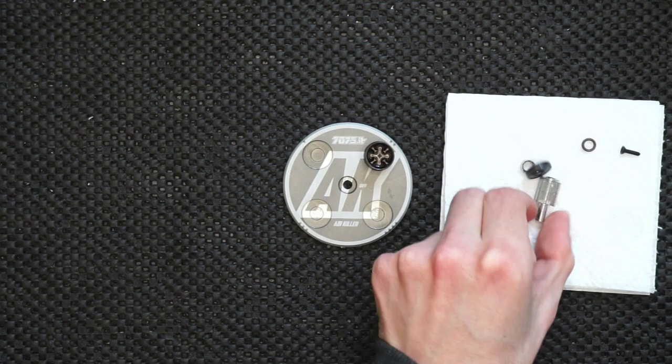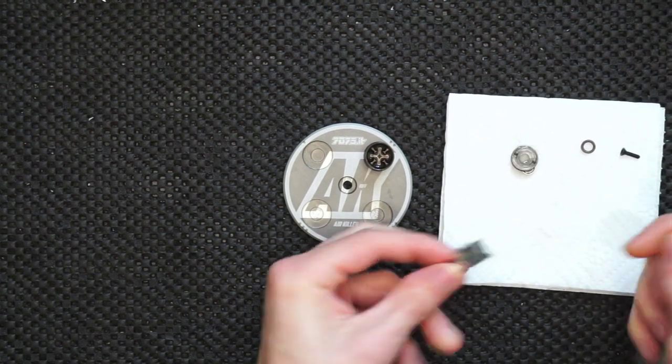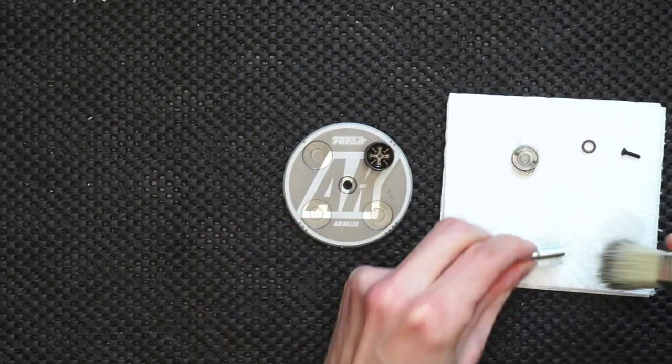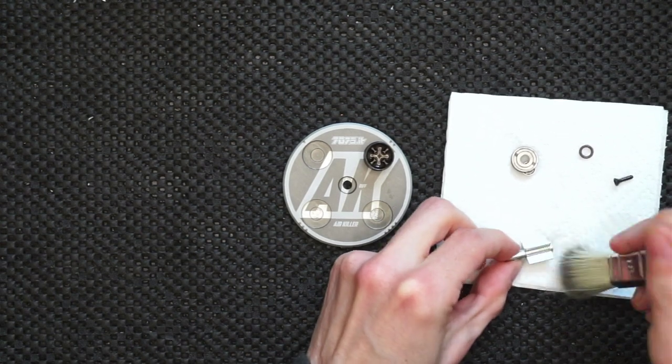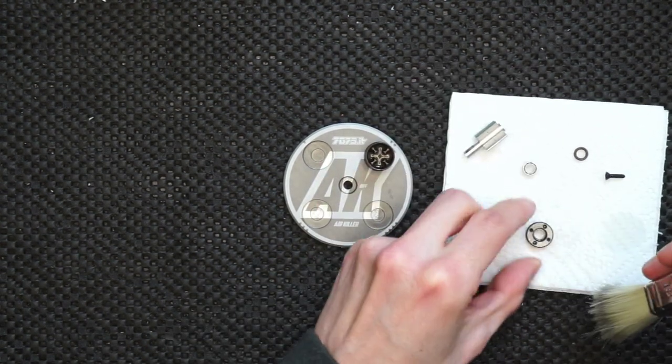Now you want to make sure everything is clean with no oil residue, especially the cavity inside the vane. Make sure it's also fully dry with no residue of brake cleaner.